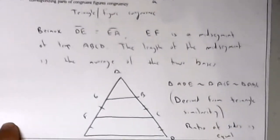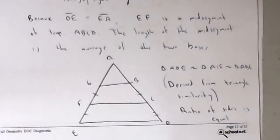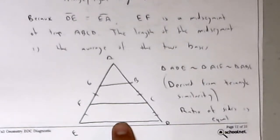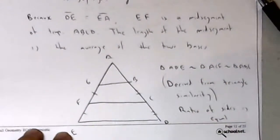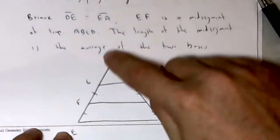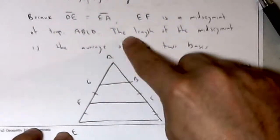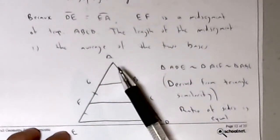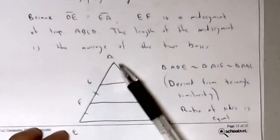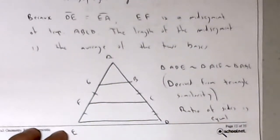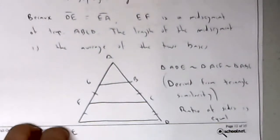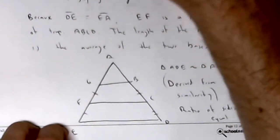The length of the midsegment must be the average of the two bases because of triangle similarity. If I extend the legs of the trapezoid to a point, I get similar triangles, and the ratio of the sides are equal. So that must be a plus sign — it's got to be a misprint.